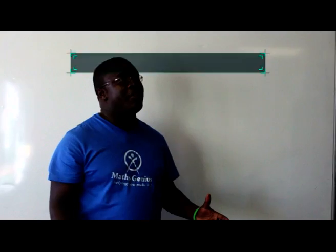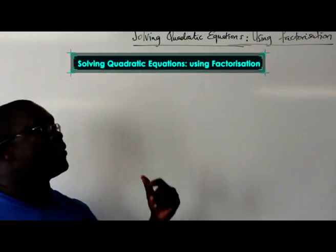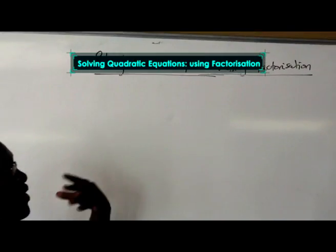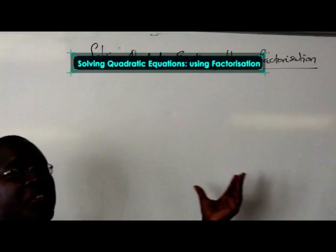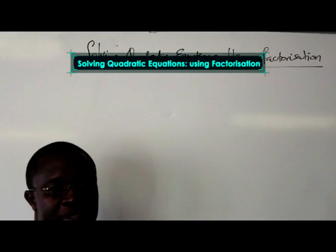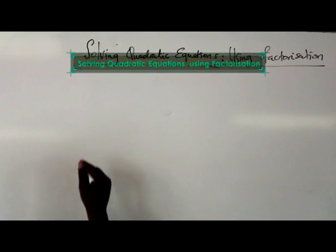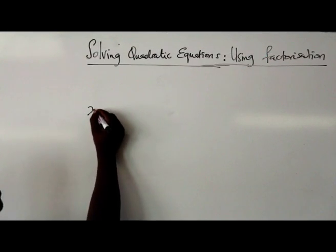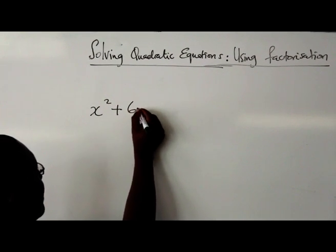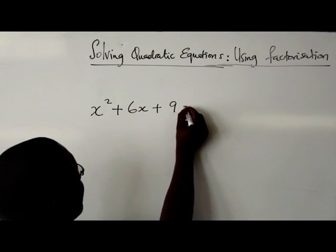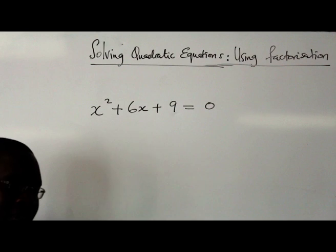Today we're going to be talking about solving quadratic equations, and the method that we're looking at is a factorization method. Let's say you're given an equation, for example, x squared plus 6x plus 9 is equal to 0.